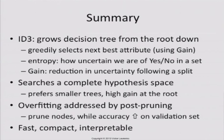To summarize: we talked about the ID3 algorithm. The basic idea is you start with a root node, split the data and grow the tree down, picking attributes to split on greedily using information gain. Information gain is the difference in uncertainty before and after the split. Decision trees do overfit the data, and the way you deal with overfitting is by post-pruning — separating data into a training portion and a validation portion, and pruning until validation performance gets better.